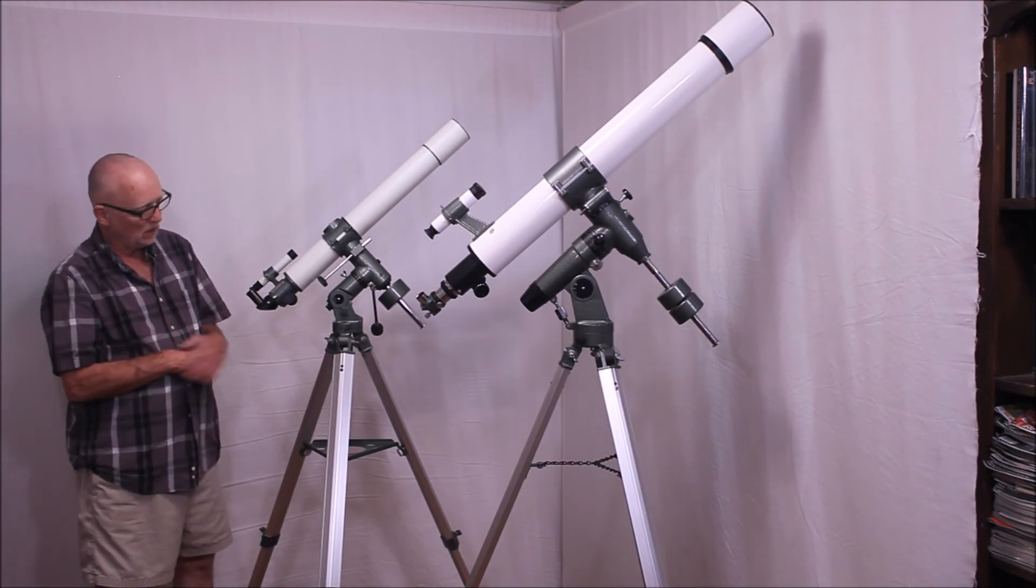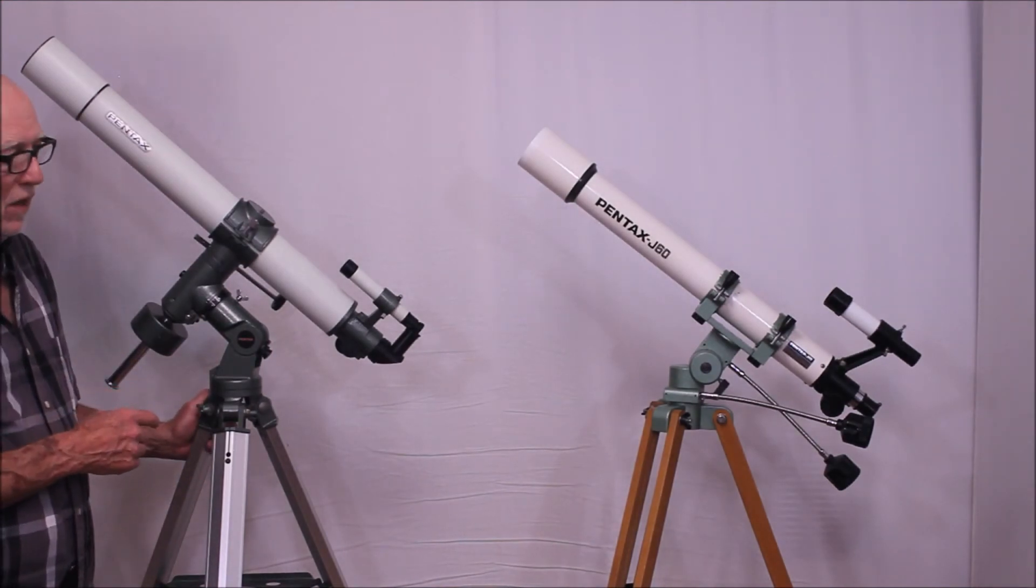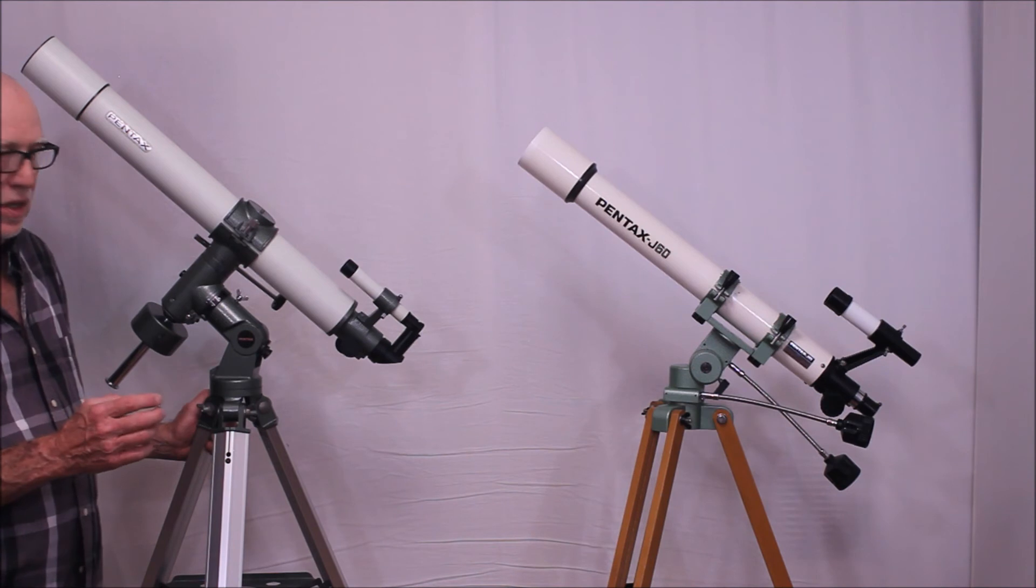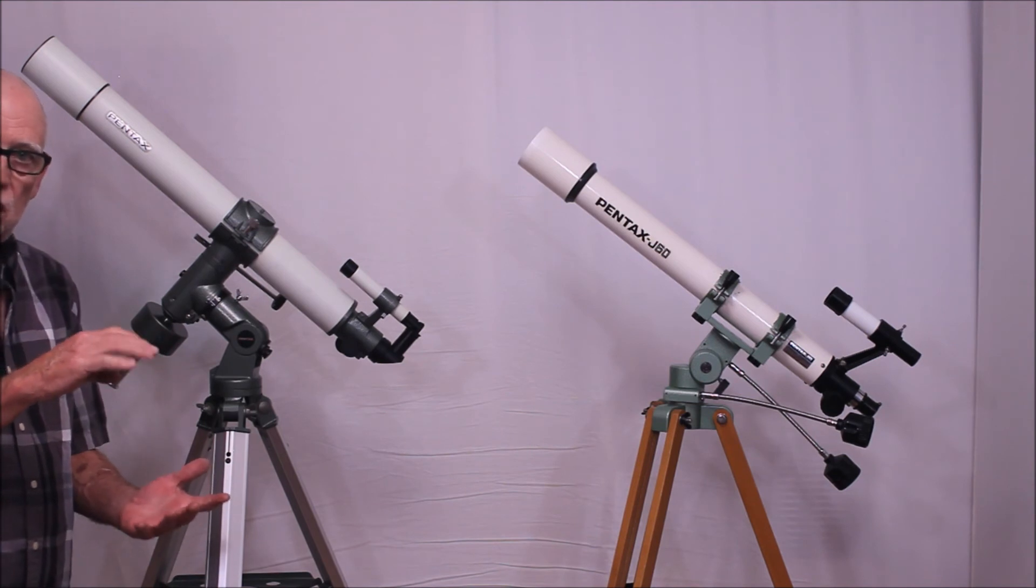But you can see a clear family resemblance here. Now we've got the Pentax 65 next to the Pentax J60. The Pentax J60 I think was an attempt by Pentax to kind of maybe slightly reduce the quality of the telescope.